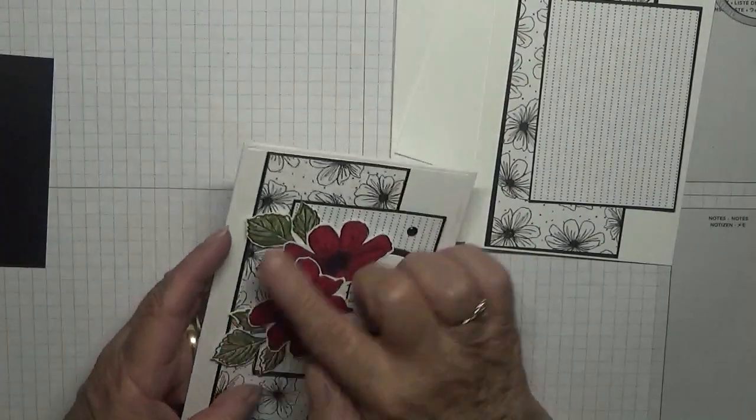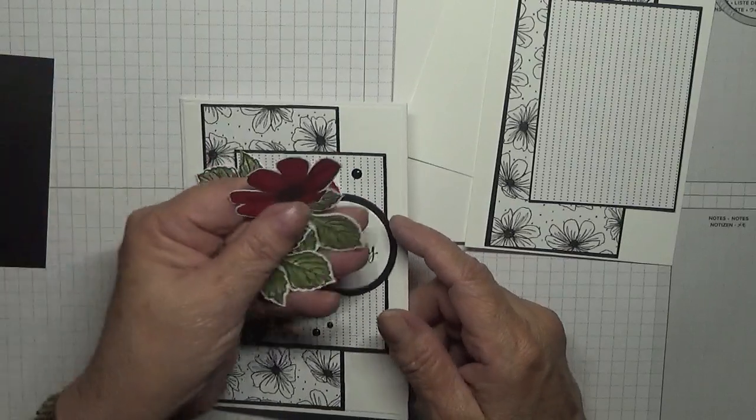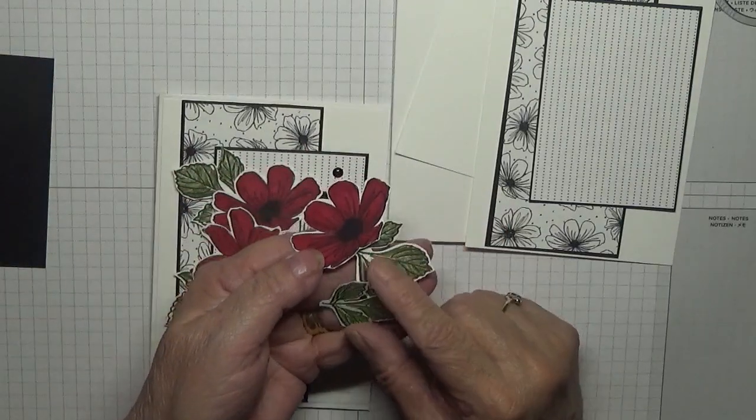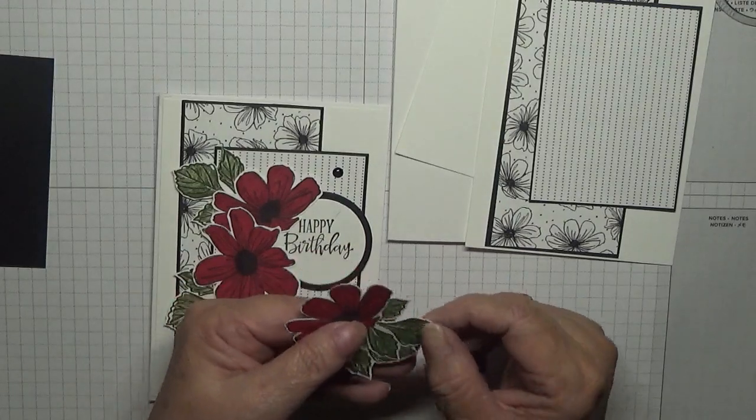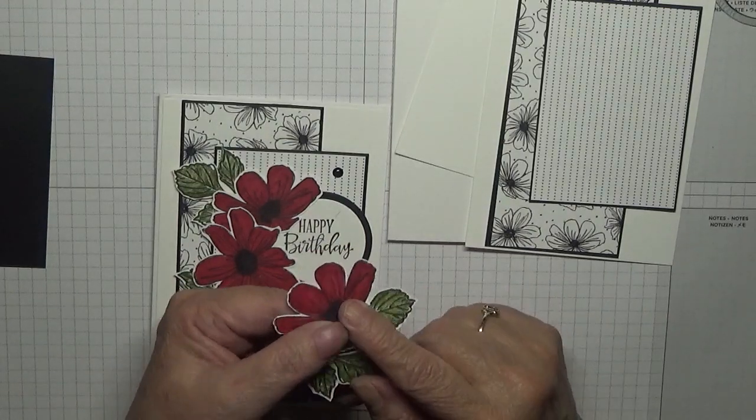Let's get started. The leaves I've already done, I've got them here. These are from the Delicate Dahlia stamp set and there's no die so you've got to cut them out by hand.